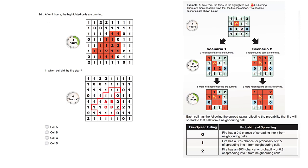After four hours, the highlighted cells are burning. Here is the fire. In which cell did the fire start? It must have started in either cell A, B, C, or D.